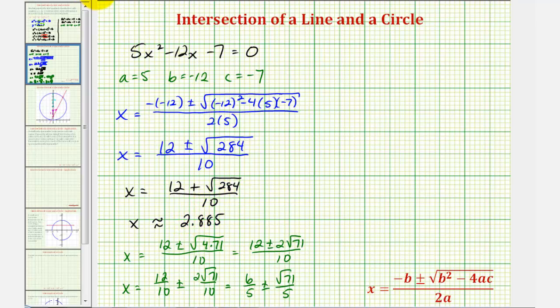We still have to find the y-coordinate, though. We know that the point of intersection in the first quadrant has an x-coordinate that's approximately 2.885. And now to find the y-coordinate, we'll perform back substitution. Let's go ahead and use the linear equation, which was y equals 2x plus 1, to find the y-coordinate. So we'd have y equals 2 times 2.885 plus 1, which comes out to y equals 6.770. So this would be the y-coordinate of the point of intersection.